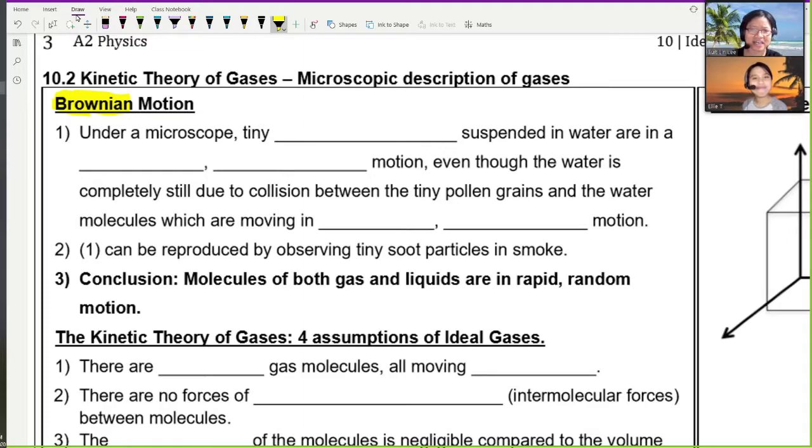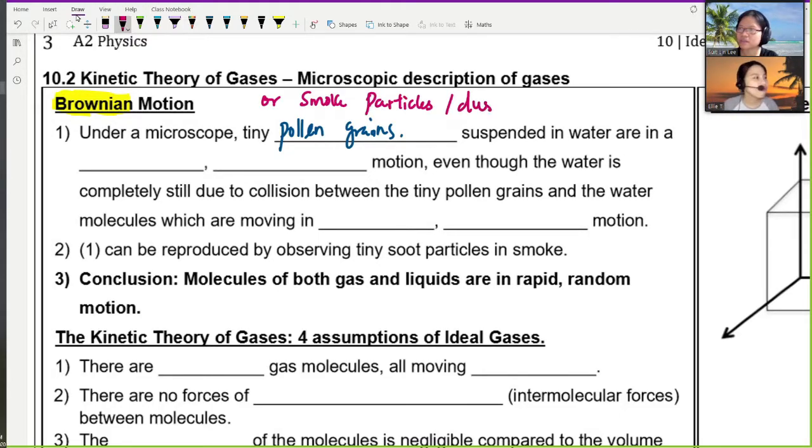Because you cannot see gases with your naked eye, my friends. Unless you have a superpower, unless you're Ant-Man, you can keep shrinking yourself. You cannot see. But what we can see under a microscope is either smoke particles or dust or pollen or in water, we can say tiny pollen grains. Or I guess if you go and dust something, let's say you whack a dusty cushion underneath the sunlight, you can see the dust particle moving around. Do you remember that? Have you done it before?